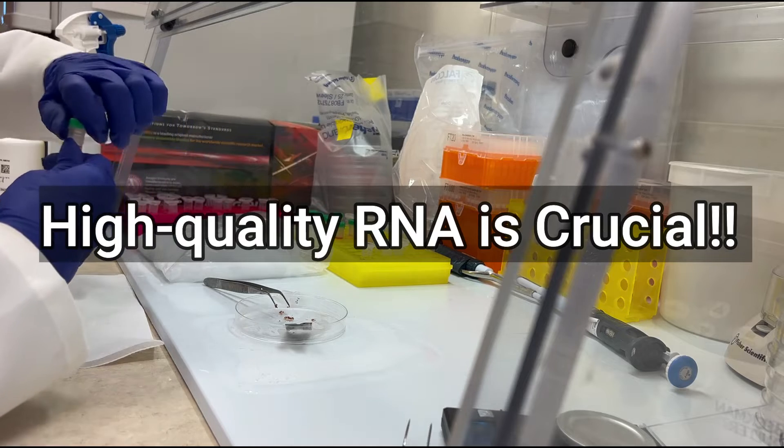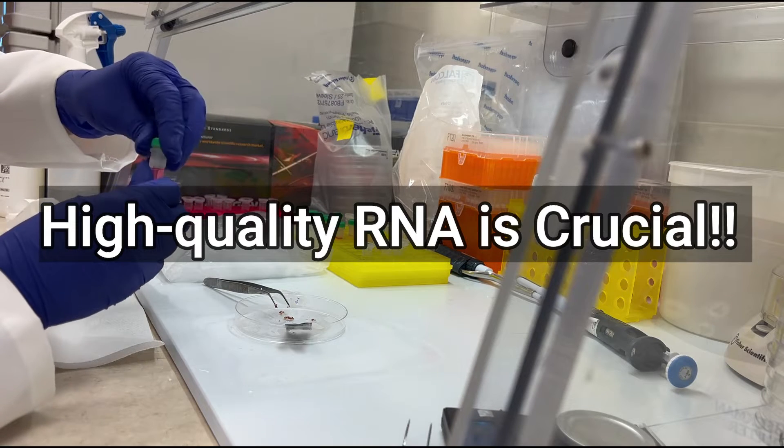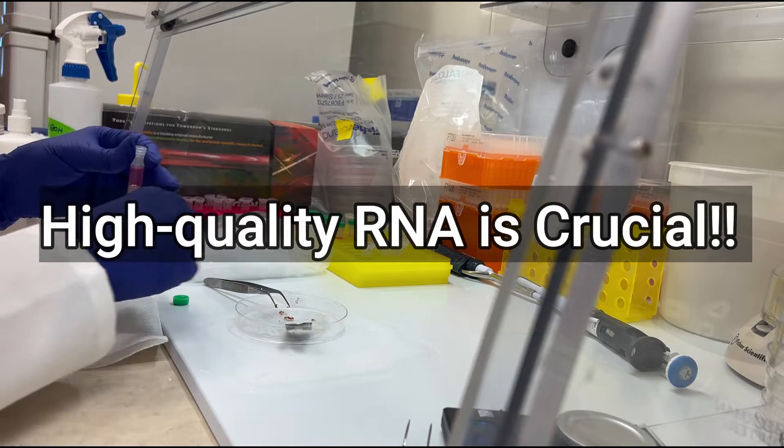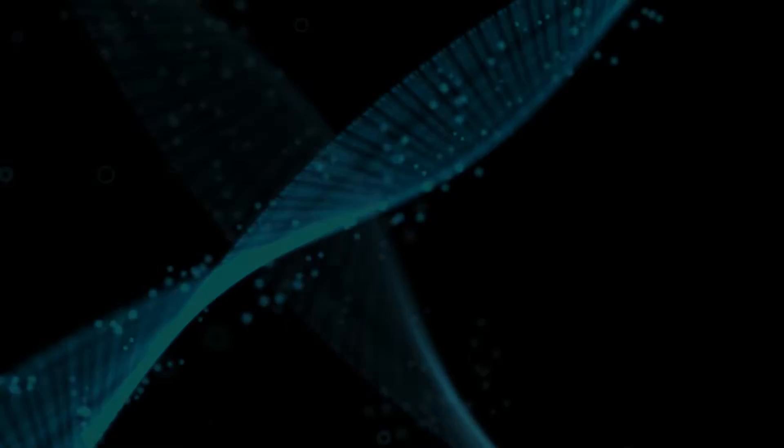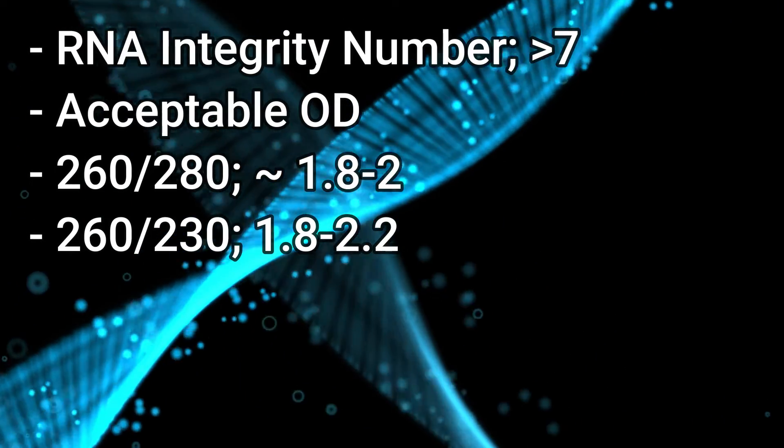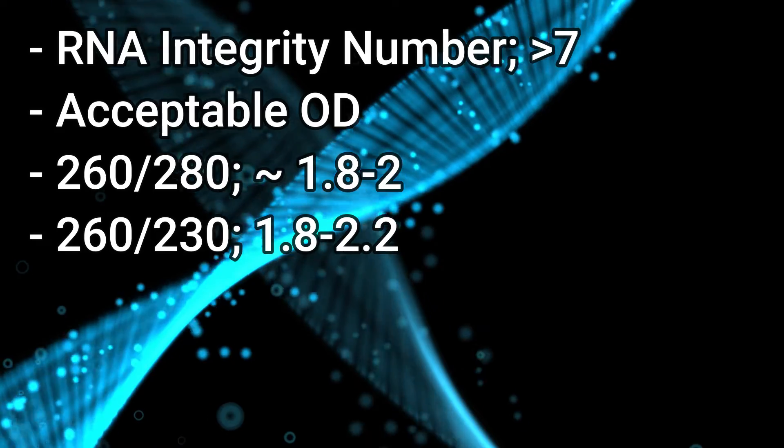Extracting high-quality RNA is crucial for various biological experiments like RNA sequencing. You must have an RNA integrity number above seven, along with good optical density and reasonable ratios to perform such experiments.